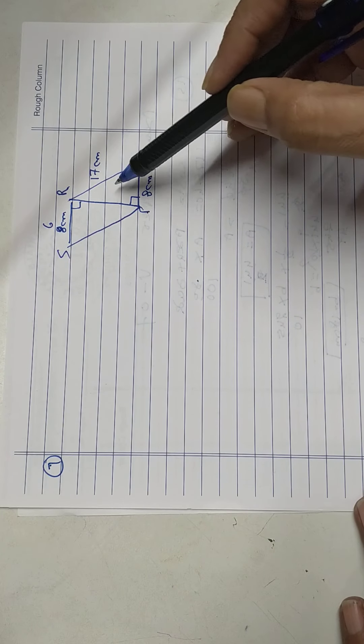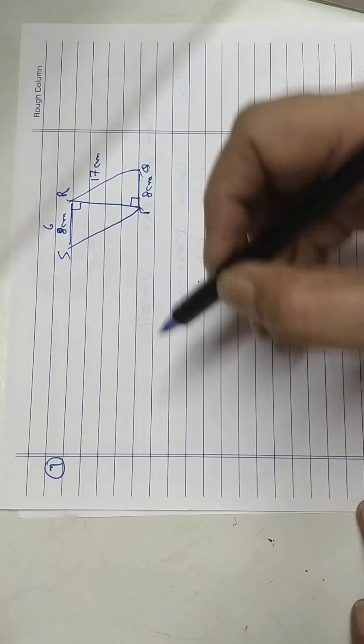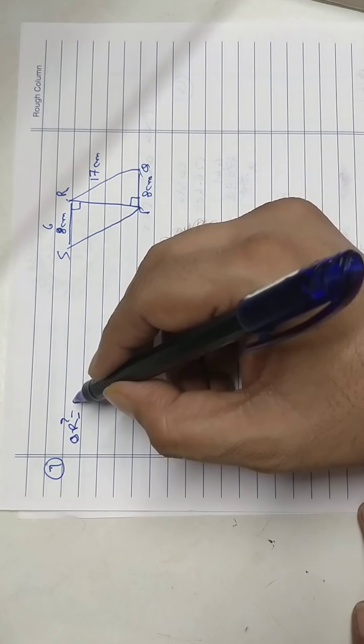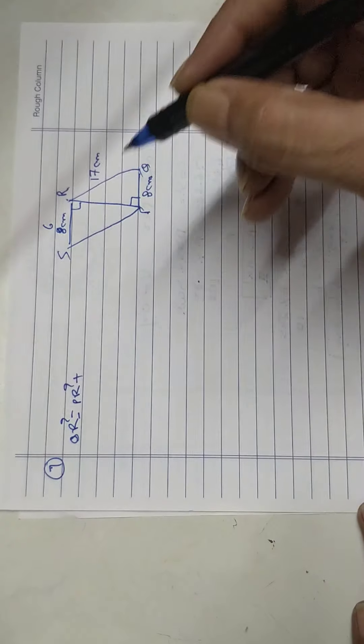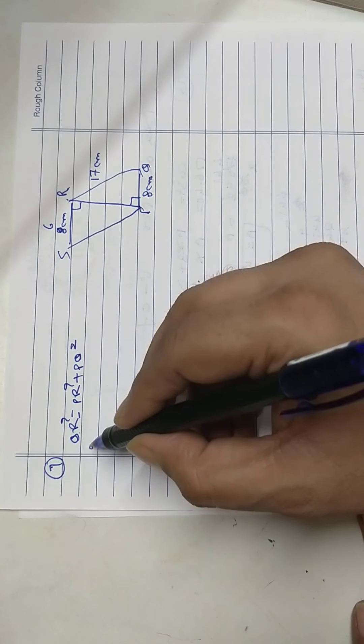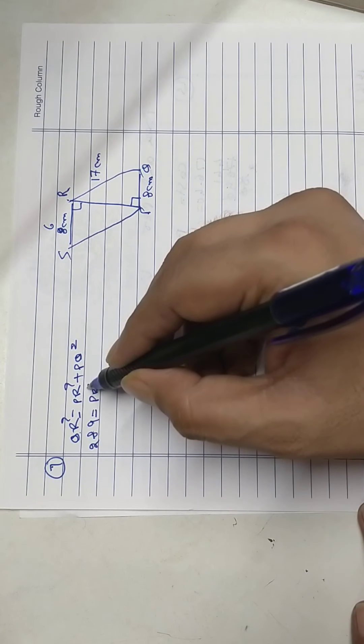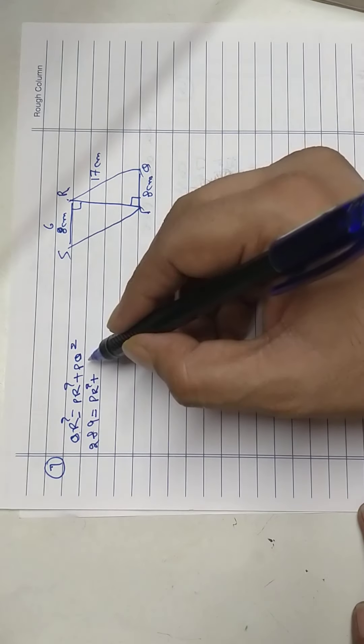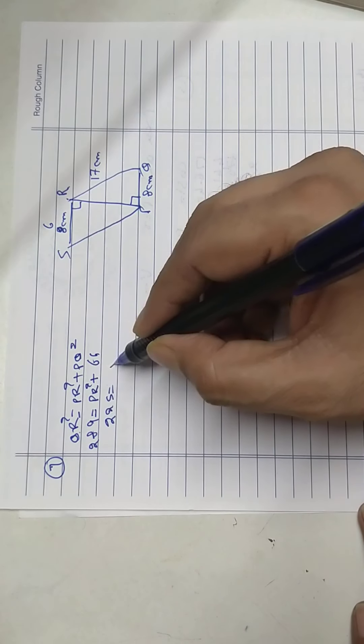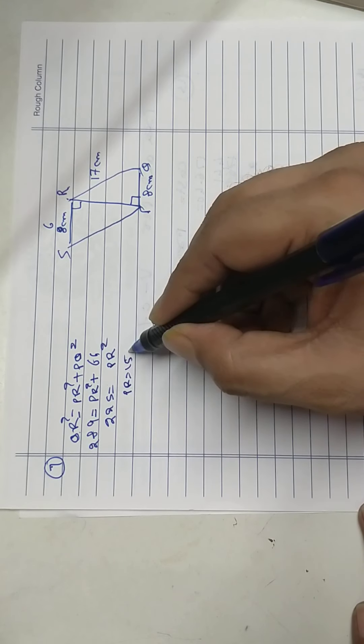First I'll find out PR, so use Pythagoras theorem. QR square equals PR square plus PQ square. 17 square is 289. PR square we don't know. 64. Subtract. 225 equals PR square, so PR equals 15 centimeters.